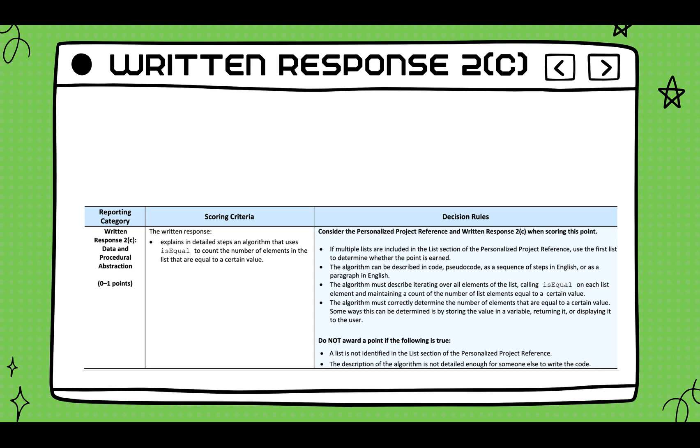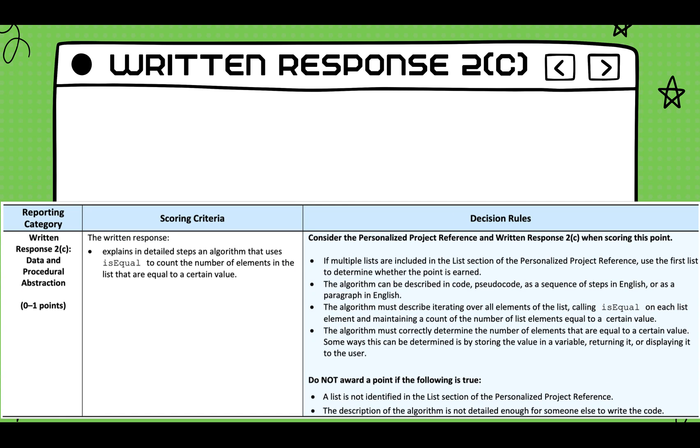Finally, we move on to our last row, row number six. And this deals with data and procedural abstraction. The scoring criteria wants you to explain in detailed steps an algorithm that uses isEqual to count the number of elements in the list that are equal to a certain value.